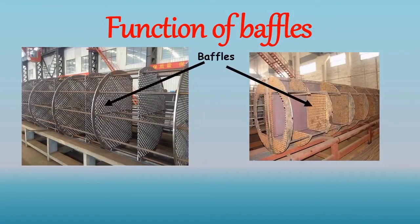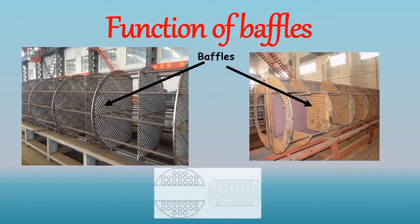In the heat exchanger, baffles must overlap at least one tube row in order to provide adequate tube support. And they should be spaced evenly throughout the tube bundle to provide even fluid velocity and pressure drop at each baffle tube section.